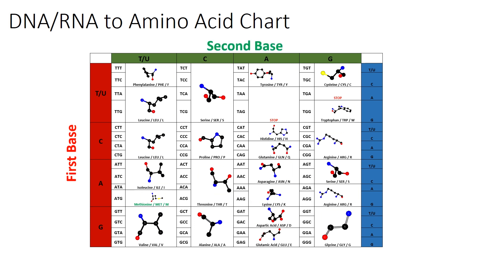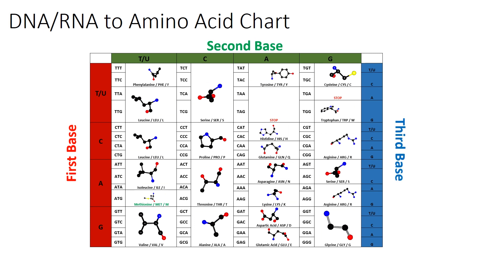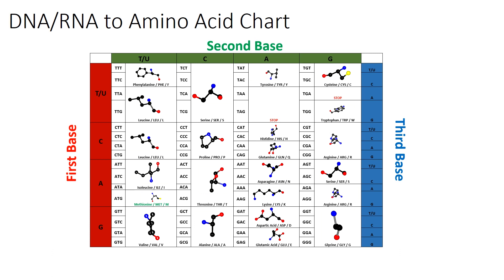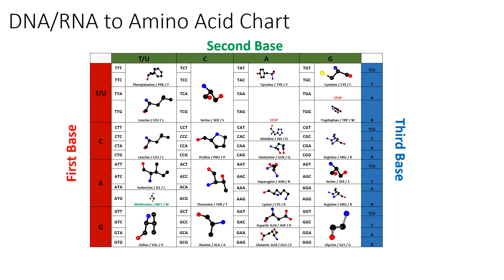The second base in the codon matches with the top part of the table, highlighted in green, with the final base matching with the right-hand side of the table, highlighted in blue, which matches the row of the first base in the codon.